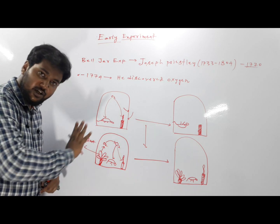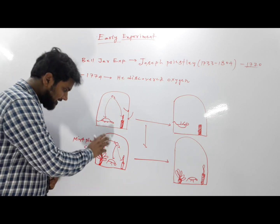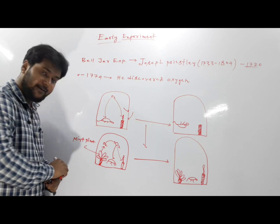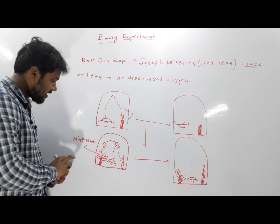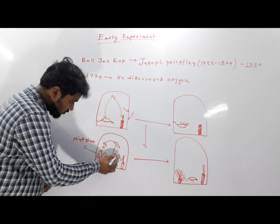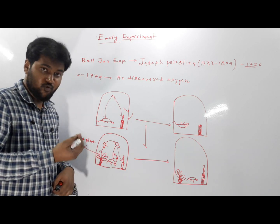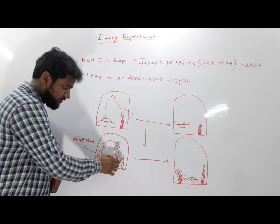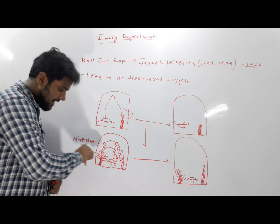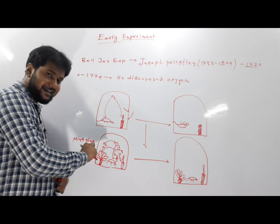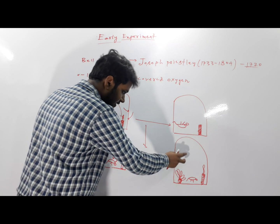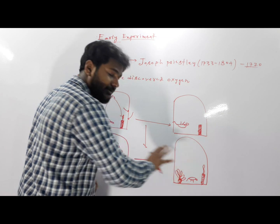The CO2 essential for photosynthesis was also not depleted, because the mouse produces CO2 as an end product of respiration, and the candle — made of wax, a carbon compound — also evolves CO2 upon burning. This CO2 is used by the plant for photosynthesis, and in return the plant releases oxygen. This cycle continues, making it a balanced, undisturbed system where everything remains fine.